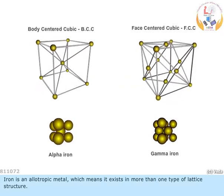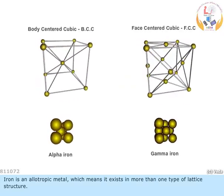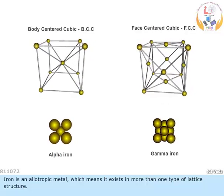Iron is an allotropic metal, which means it exists in more than one type of lattice structure.